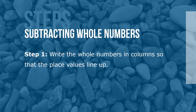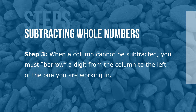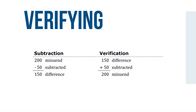Here are the steps for subtracting whole numbers. Step 1: Write the whole numbers in columns so the place values line up. Step 2: Starting with the units column, subtract the digits. Step 3: When a column cannot be subtracted, you must borrow a digit from the column to the left of the one you're working in. An easy method of verifying subtraction is to add the difference and the subtrahend. If you subtracted correctly, this total will equal the minuend.